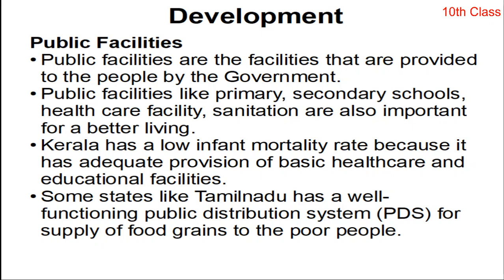Some states like Tamil Nadu have a well-functioning Public Distribution System, or PDS. Public distribution also comes under public facilities. The PDS supplies food grains to poor people — for example, people who are living below the poverty line are provided food grains at subsidized prices through ration shops, also called fair price shops.